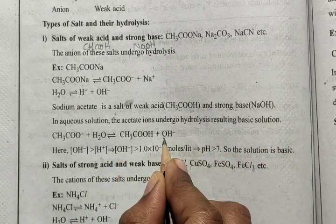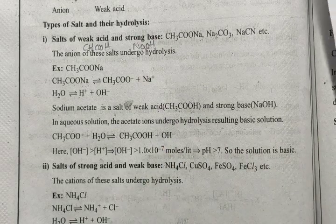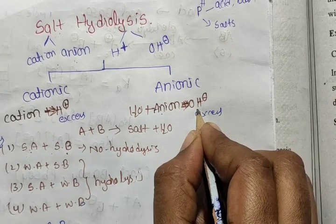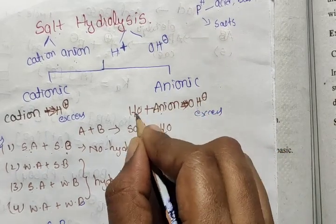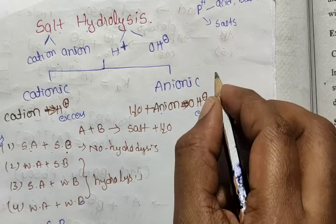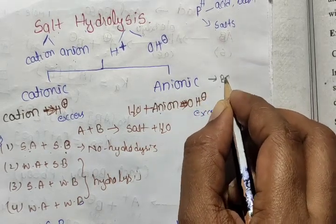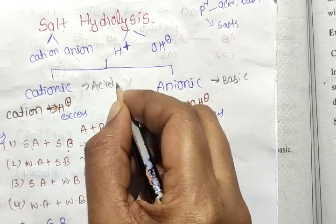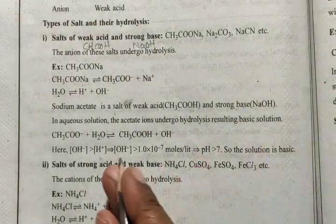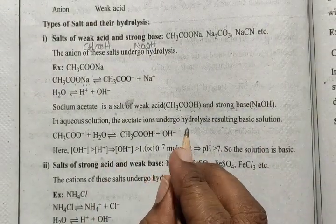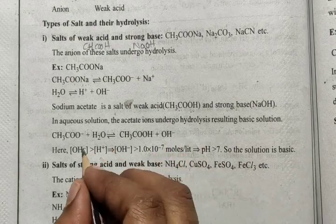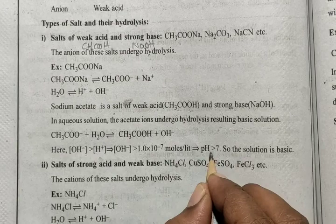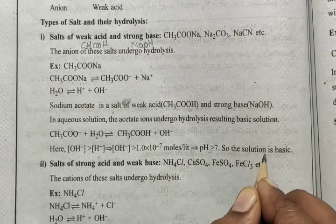The hydrolysis of sodium acetate results in a basic solution. OH⁻ ions are released. Acetic acid is a weak acid, so the acetate ion undergoes anionic hydrolysis, releasing OH⁻. Excess OH⁻ means OH⁻ > H⁺, which means pH is greater than 7. So the solution is basic.